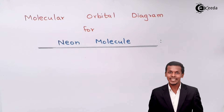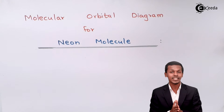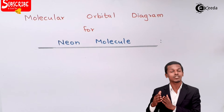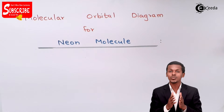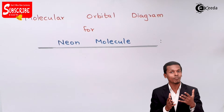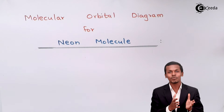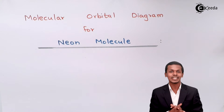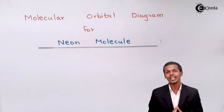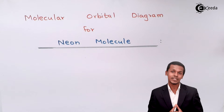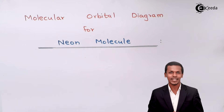Talking about the neon molecule, the first thing we have to know is how to represent the atomic orbital of the neon atom and of another neon atom, so that we can combine those two and form a molecular orbital for the neon molecule. But before that, we have to know how to represent the electronic configuration.